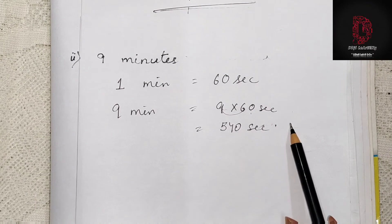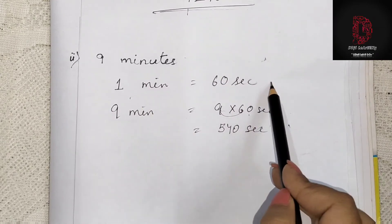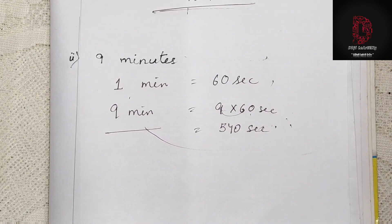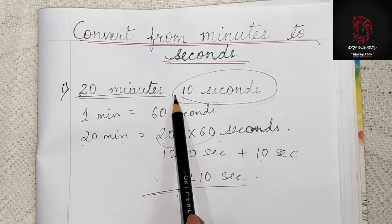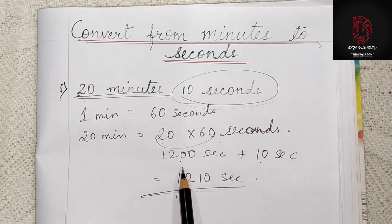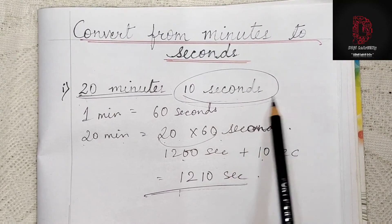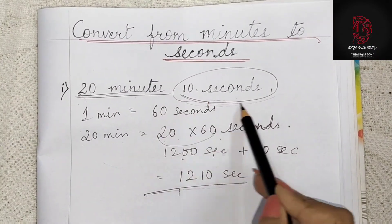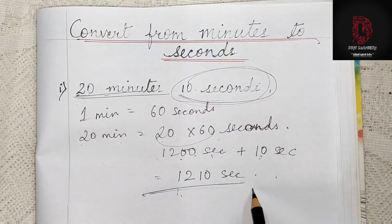As you can see here, in the first example — 20 minutes and 10 seconds — the 10 seconds were already given in the question, so we don't need to convert them. We converted 20 minutes to 1200 seconds, and then added the 10 seconds that were already in seconds. So 1200 plus 10 equals 1210 seconds.